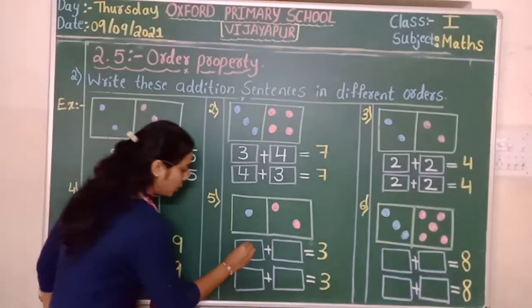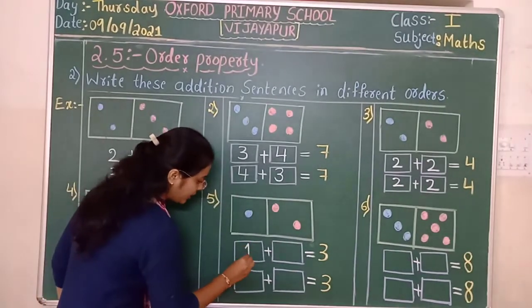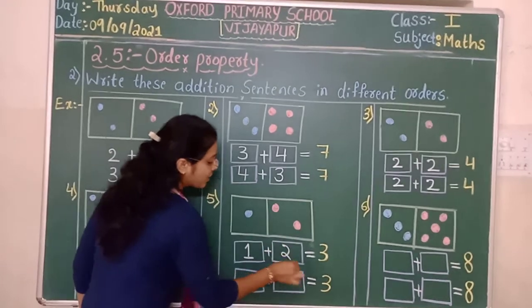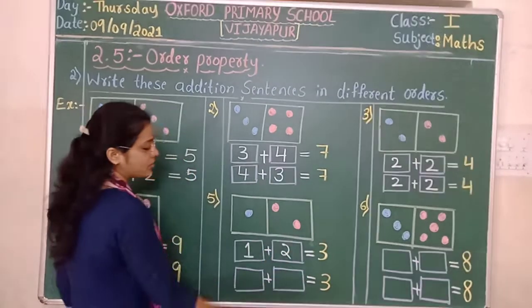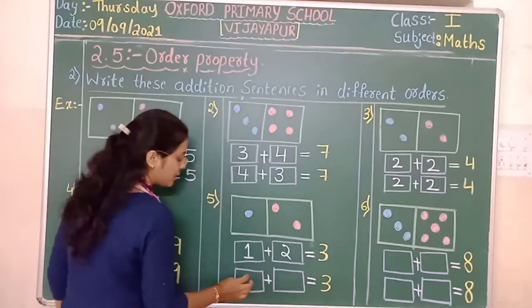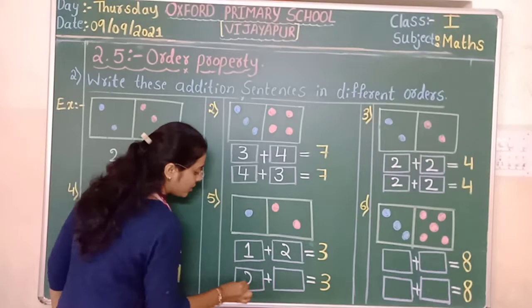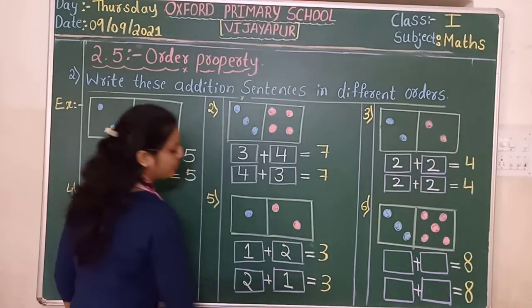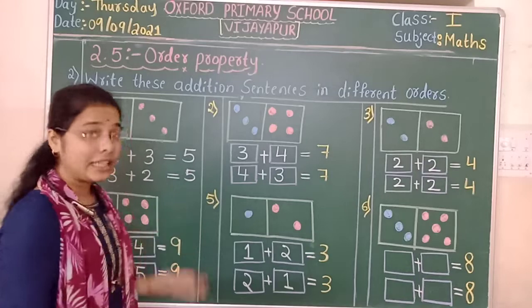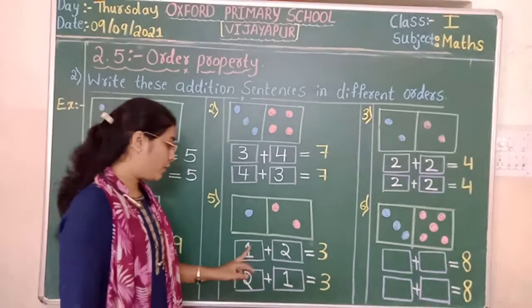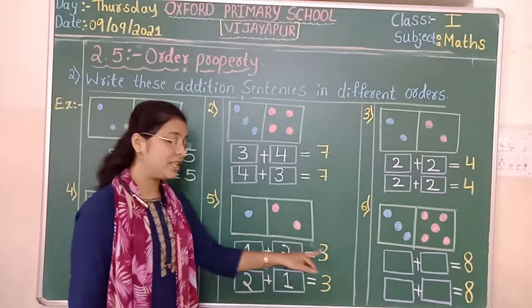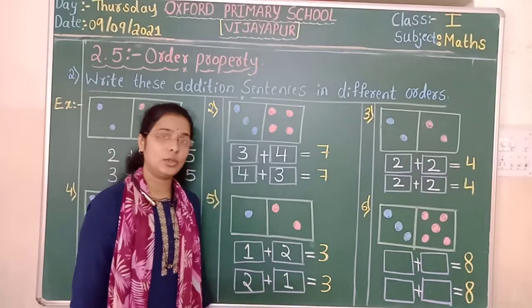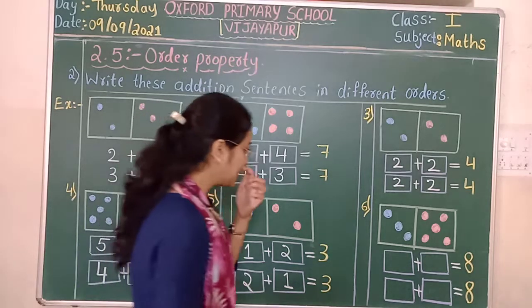Now consider two as the first addend and one as the second addend. The answer is three. One plus two is three, and two plus one is also equal to three.